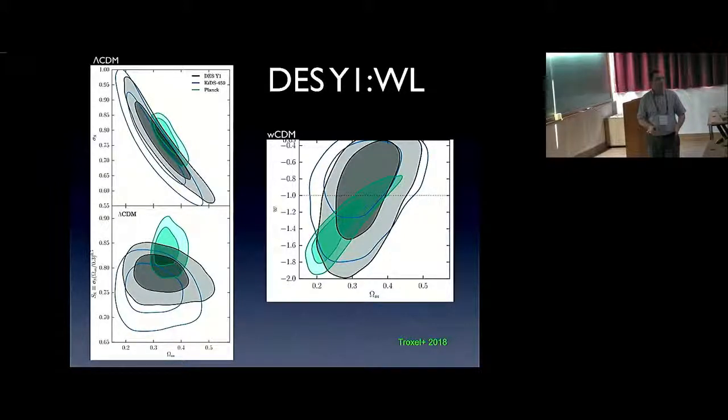Now, we can expand also from lambda CDM to a model which has more parameters in the dark energy sector. This is the so-called WCDM model, where we also now vary the equation of state parameter W of dark energy, assuming that it's a constant. Then, we get these kind of rather broad contours. Again, DES in gray and Planck in green, all consistent with W equals minus one. I'll come back to that also in a minute.